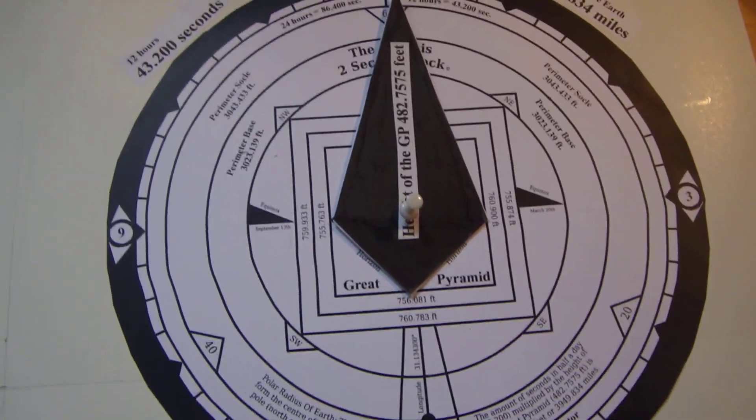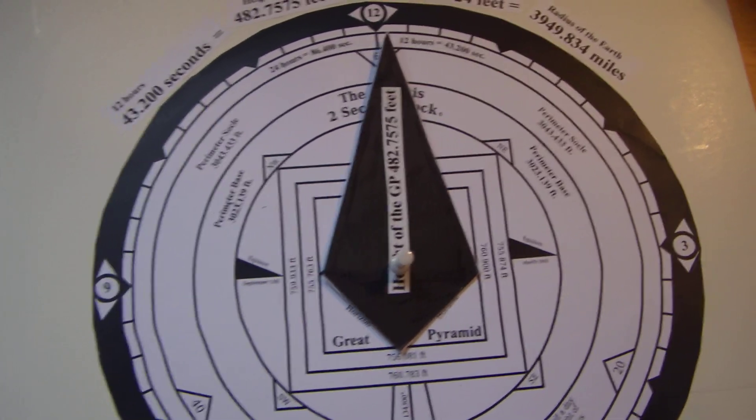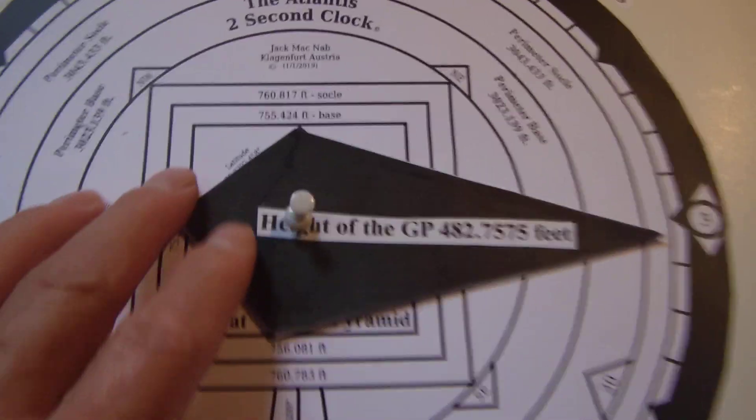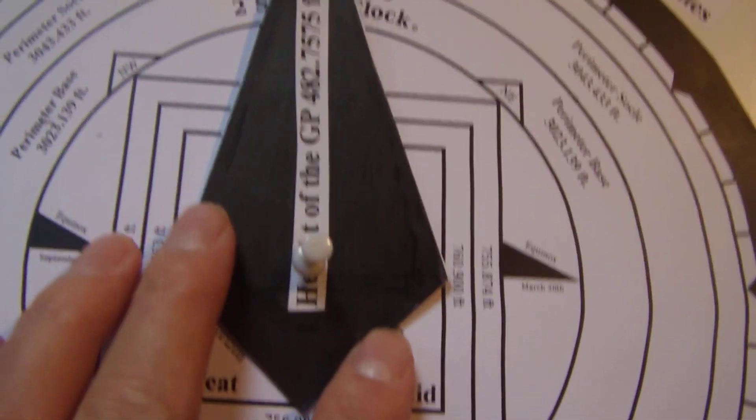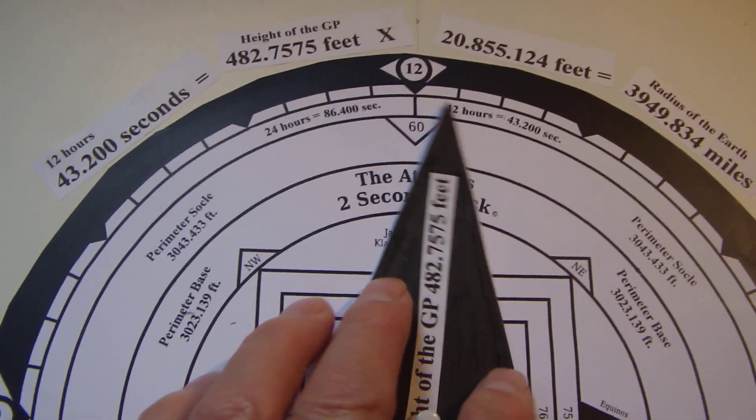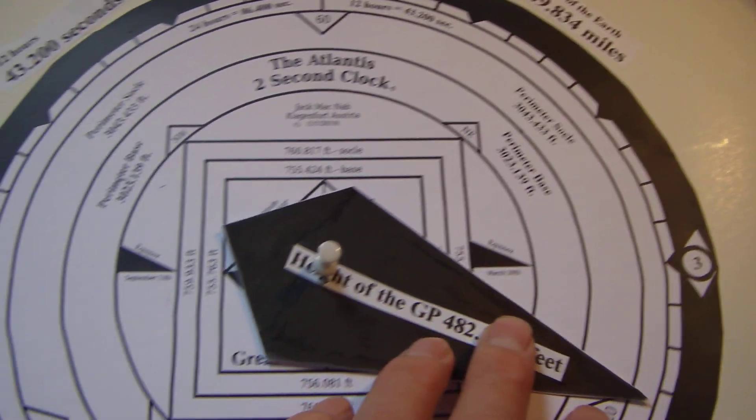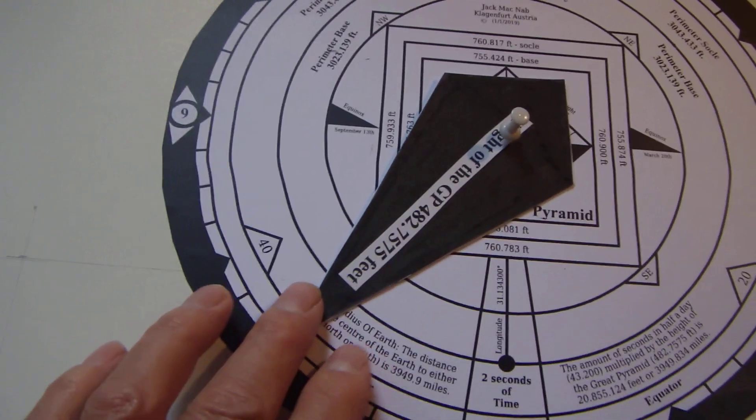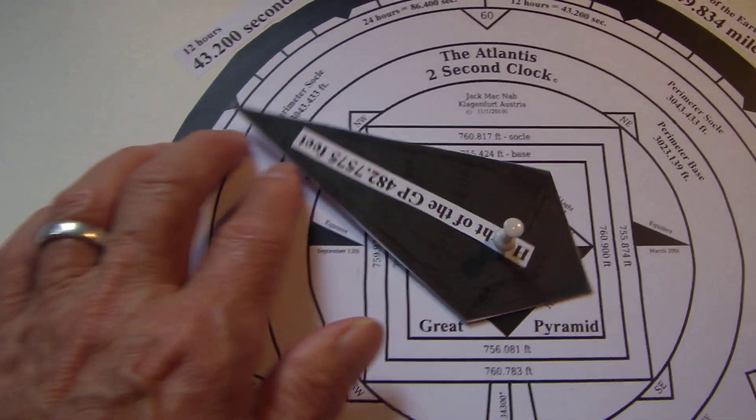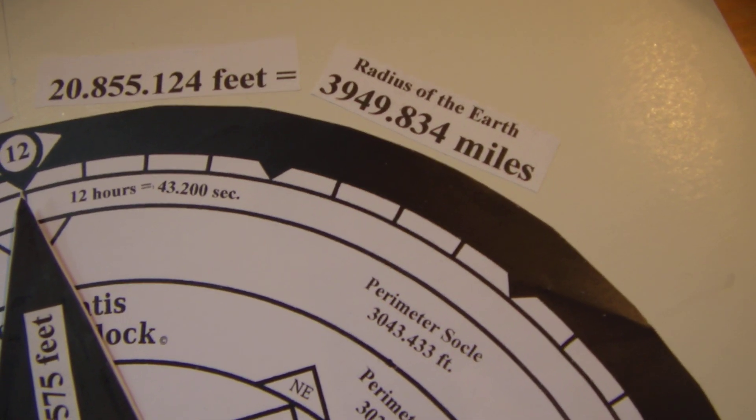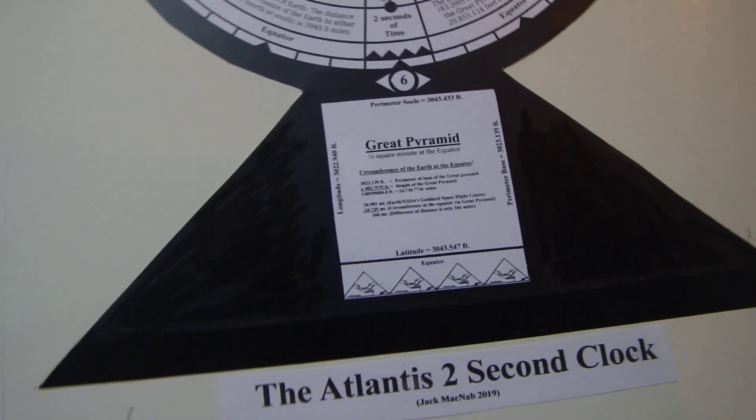So this is pretty basic, this concept right here. We take the height of the Great Pyramid of Giza, which is this number here, and we multiply it by the number of seconds in a half a day - the number of seconds in 12 hours is 43,200 seconds. So we bring that hand all the way up, and this gives us the radius of 3,949 miles.